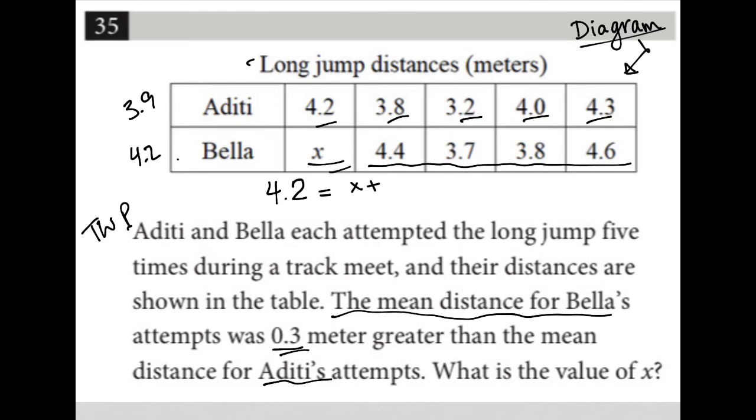So x plus, and I'm just going to put all this into a single number instead of writing it all down. So let's find what that single number is. 4.4 plus 3.7 plus 3.8 plus 4.6 equals 16.5. So 16.5 plus the unknown distance all divided by five should equal 4.2.